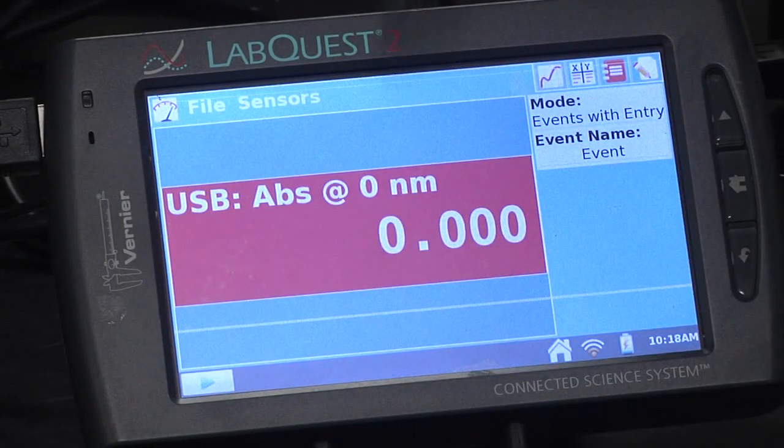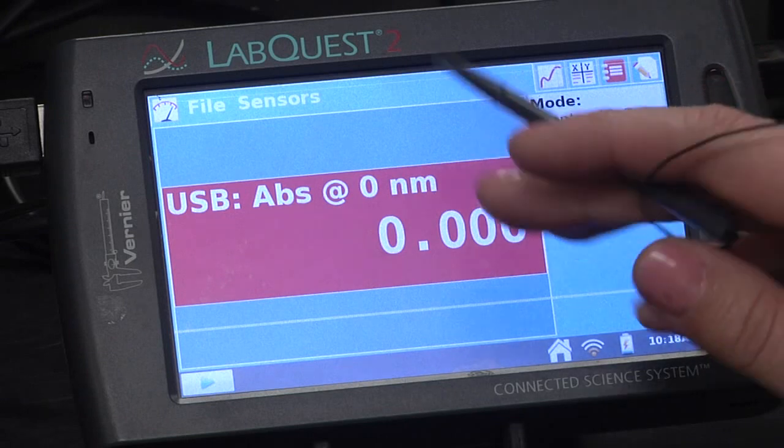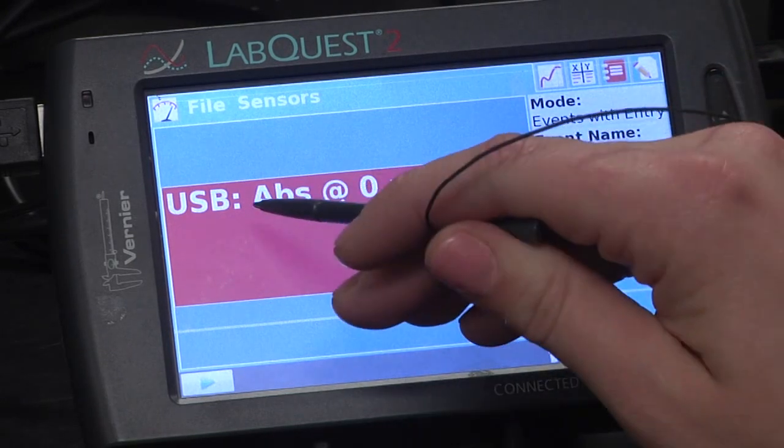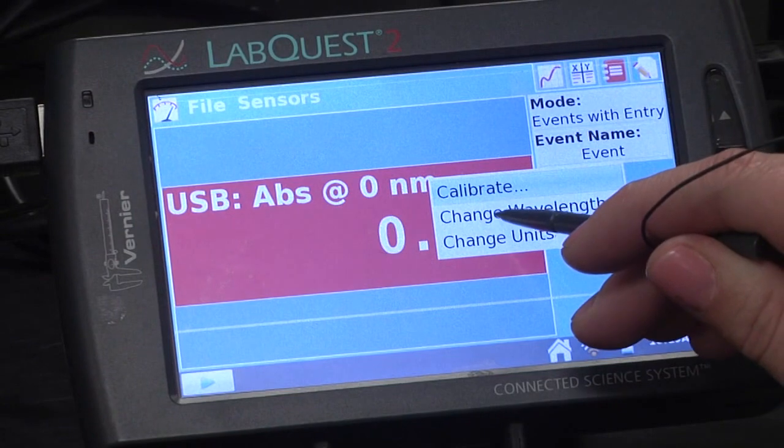Next we're going to want to change our absorbance to 447 nanometers. You're going to tap the red box and then press change wavelength.